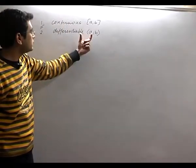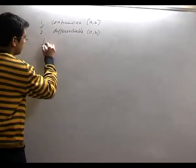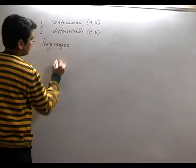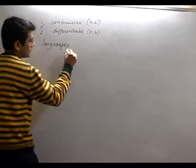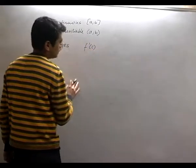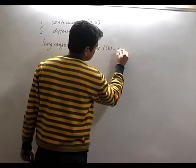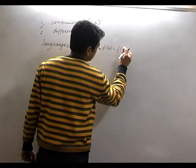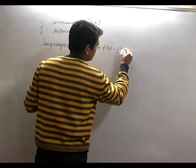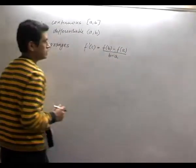If these two conditions are given, then by Lagrange's theorem, we can say that there exists a point c such that f'(c) is equal to [f(b) minus f(a)] divided by [b minus a].